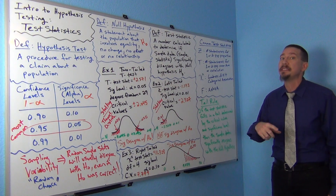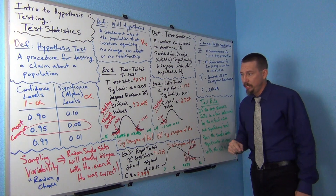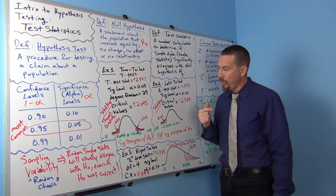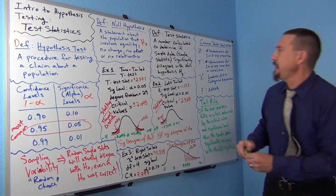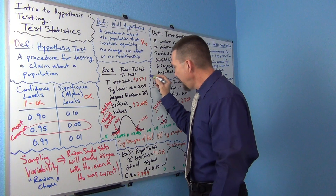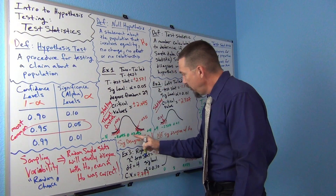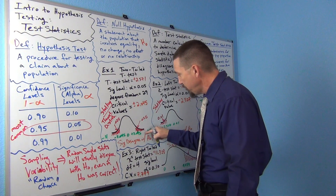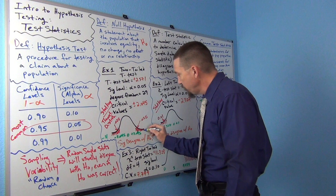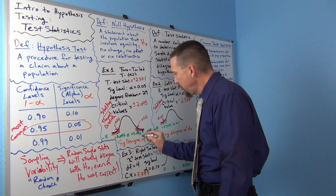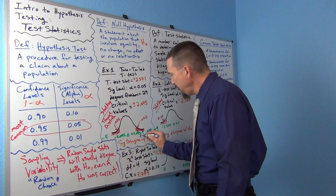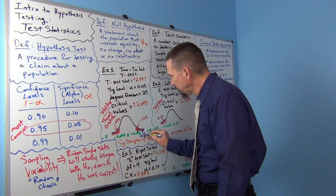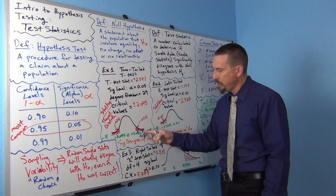It's not just a little bit of a disagreement — it's a significant disagreement. So where is 2.571? Well, 2.571 would be bigger than 2.045, right? It would be sort of in here — here's where my test statistic is falling. My test statistic is falling in the tail.